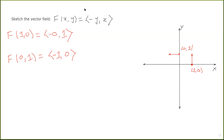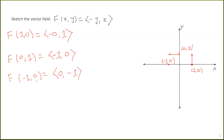Now I look at the point (-1, 0). Evaluating the vector field: f(-1, 0) — the first component is minus y, y is zero, so the first component is zero; the second component is x, which is minus one. So at the point (-1, 0) I draw the vector (0, -1), which is just a downward-pointing unit vector — something like this.